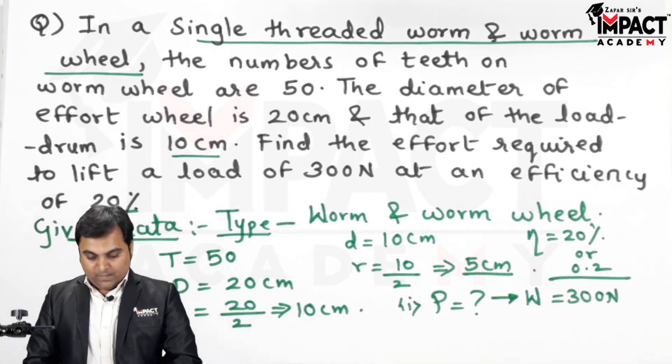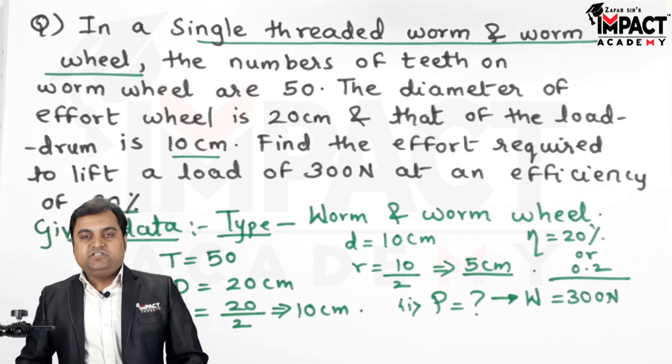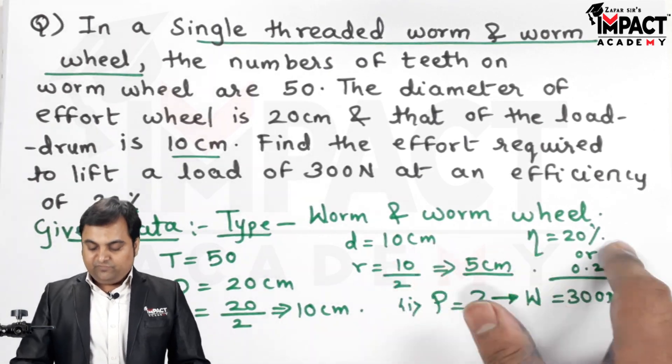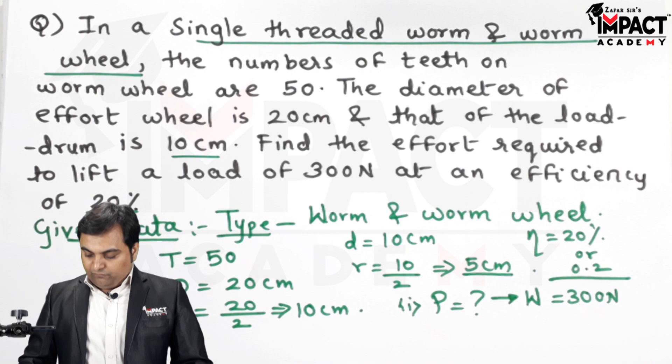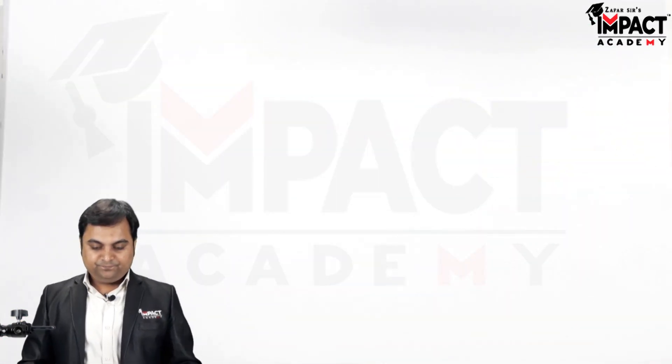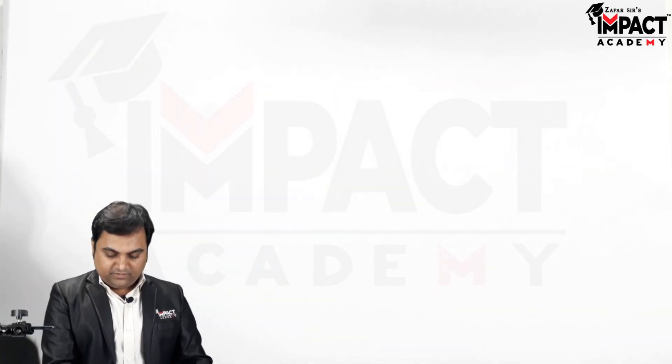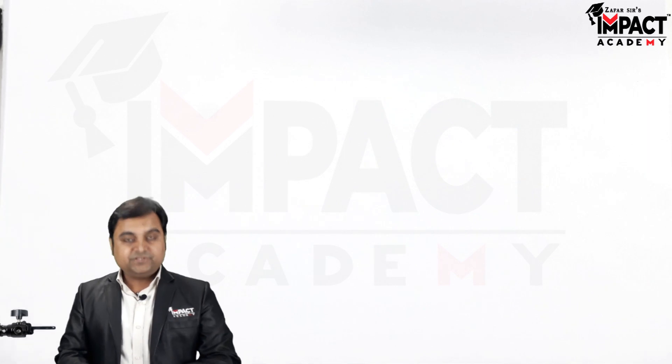Now when we have such kind of problems which belongs to a specific machine that is worm and worm wheel is given here, we need to find the velocity ratio for the worm and worm wheel, and that velocity ratio is given by the formula. I'll write it into the solution part.